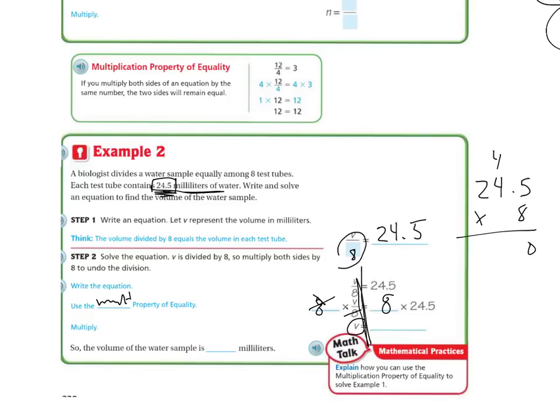And then eight times 24.5. So eight times five is 40, eight times four is 32, 33, 34, 35, 36, and eight times two is 16. I have one decimal space I need to move over. So my answer is 196.0, or you could say 196 milliliters.